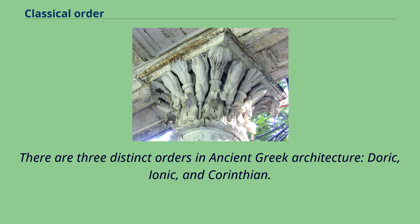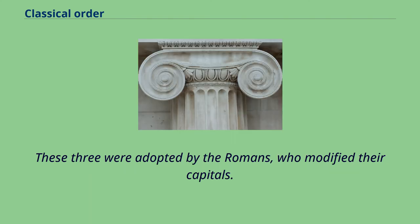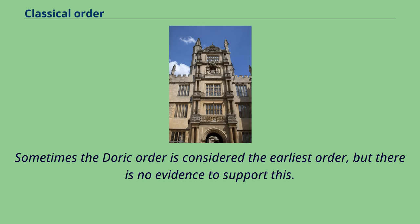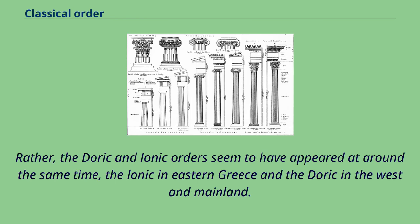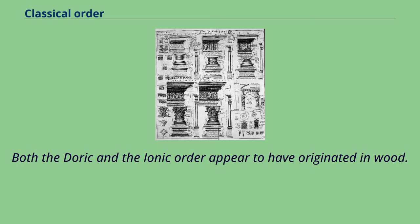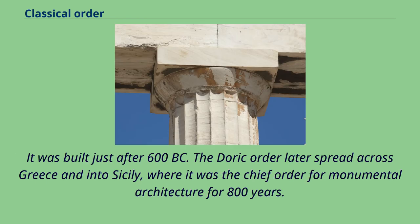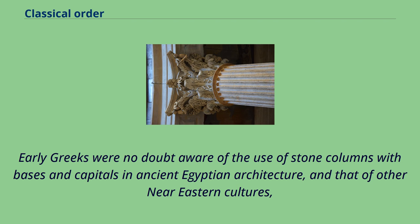There are three distinct orders in ancient Greek architecture: Doric, Ionic, and Corinthian. These three were adopted by the Romans, who modified their capitals. The Roman adoption of the Greek orders took place in the 1st century BC. The three ancient Greek orders have since been consistently used in European neoclassical architecture. The Doric and Ionic orders seem to have appeared at around the same time — the Ionic in eastern Greece and the Doric in the west and mainland. Both appear to have originated in wood. The Temple of Hera in Olympia is the oldest well-preserved temple of Doric architecture, built just after 600 BC. The Doric order later spread across Greece and into Sicily, where it was the chief order for monumental architecture for 800 years. Early Greeks were no doubt aware of the use of stone columns with bases and capitals in ancient Egyptian architecture, and that of other near-eastern cultures.